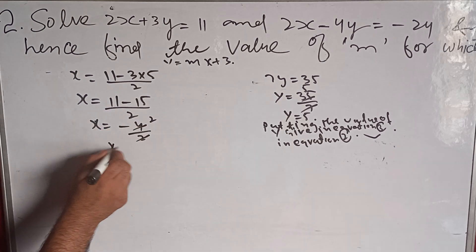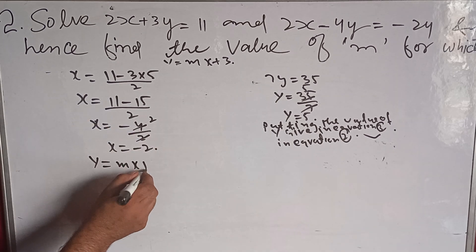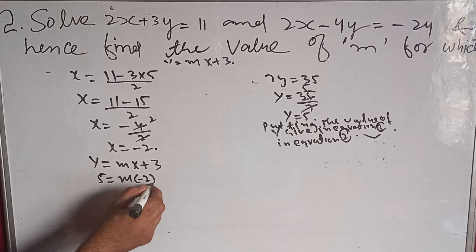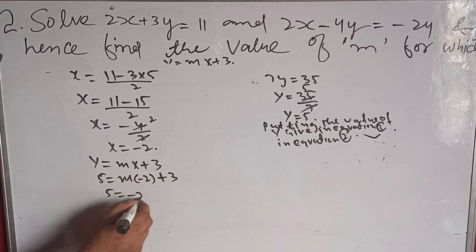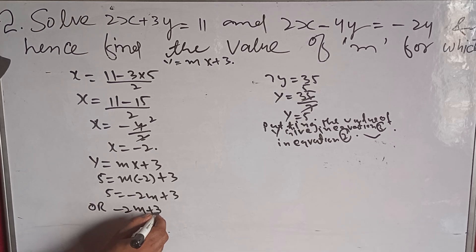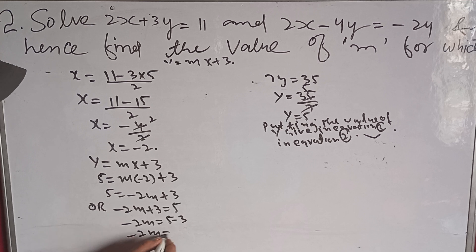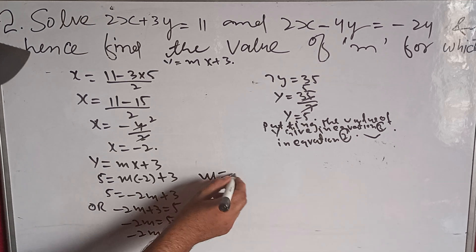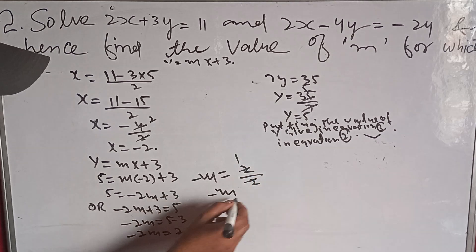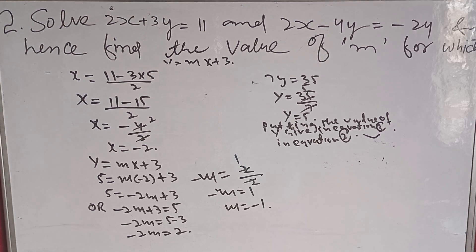So x is equal to minus 2. Now finding the value of m: y is equal to mx plus 3. We found y equals 5 and x equals minus 2. So 5 is equal to minus 2m plus 3. Minus 2m is equal to 5 minus 3, so minus 2m is equal to 2, giving m is equal to 2 divided by 2, therefore m is equal to minus 1.